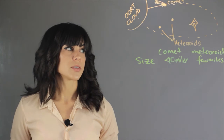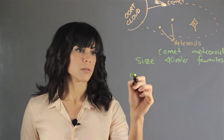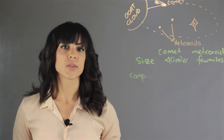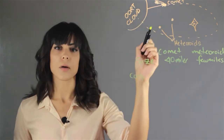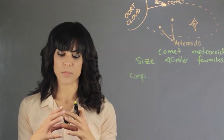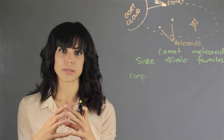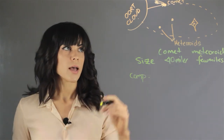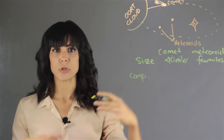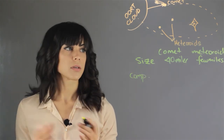The second difference that we have is composition. The composition of a comet — it has frozen gases and ice trapped in the nucleus, and this melts off as it goes around the Sun, and then you get an ion tail and a dust tail.